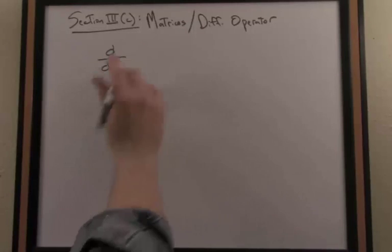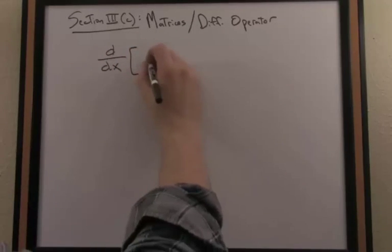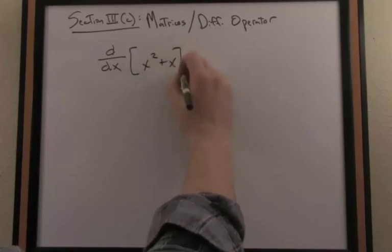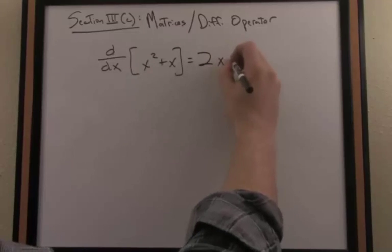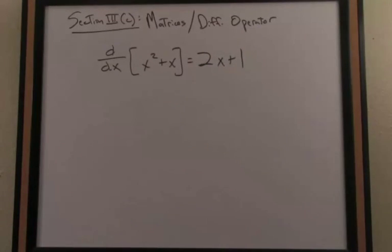If I want to take the derivative with respect to x, let's say of the function x² + x, those of us that have had some calculus, we use the power rule here and the linearity of the derivative, and essentially, long story short, we get 2x + 1. So I want to show you then how an action,